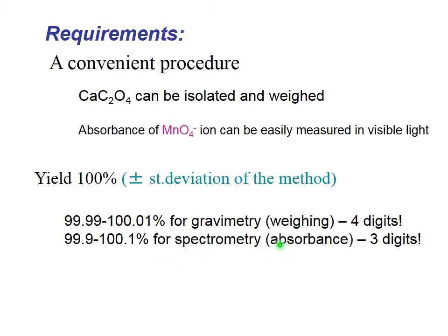For spectrometry and titrimetry we are usually less strict and allow an error of 0.1% relative, so three significant figures must be correct. However, the yield should still be between 99.9% and 100.1%, which is a very tough requirement.